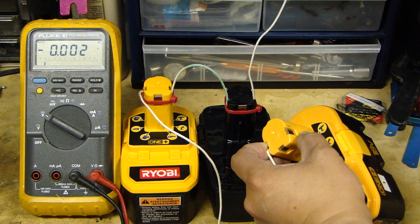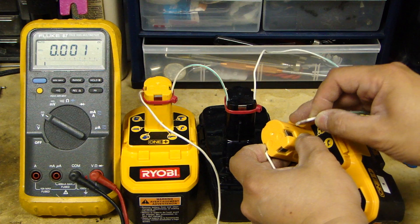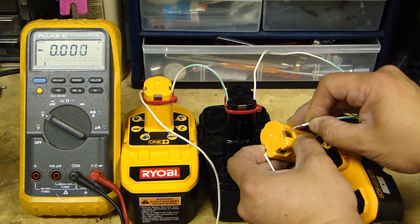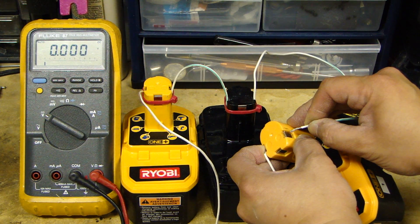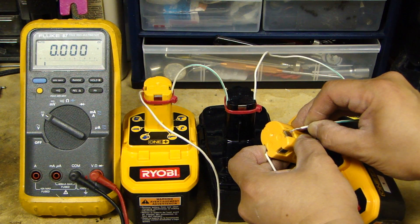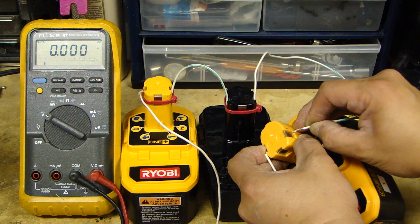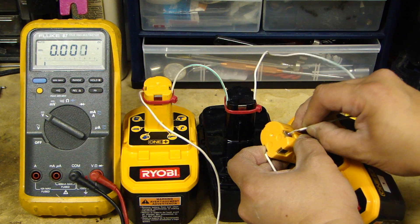So this is a positive lead. On the positive lead you're going to see a spark when I do this, but you want to do it very quickly. So one, two, three, four, five, six, seven, eight.